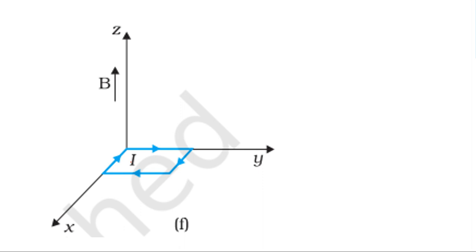In the case where the current is clockwise, the area vector is in the negative K-cap direction, opposite to the magnetic field. The angle between the area vector and the field is 180°. Putting in sin 180° = 0, the torque is zero.